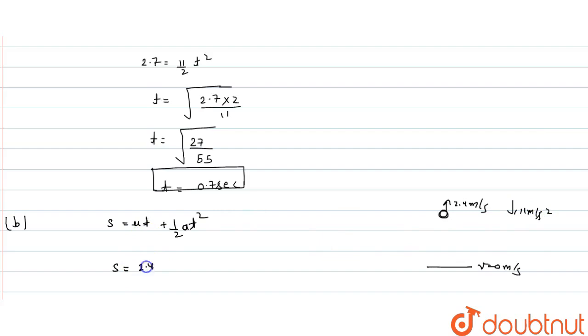2.4 into time 0.7 for displacement plus half acceleration minus 9.8, because it is downward direction.